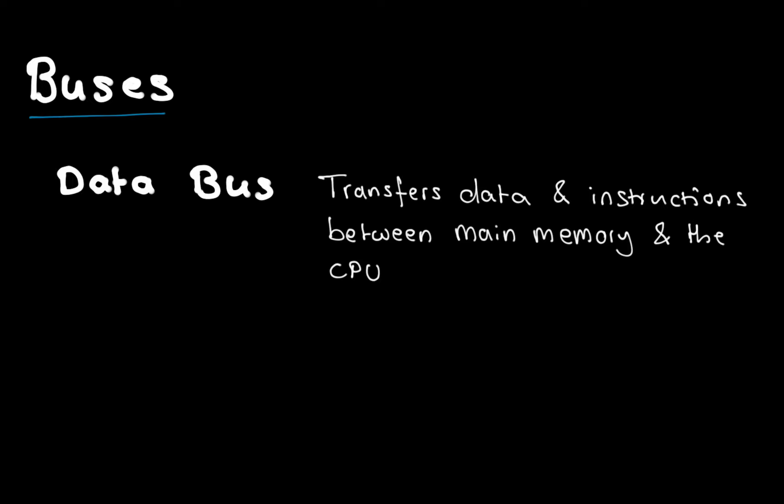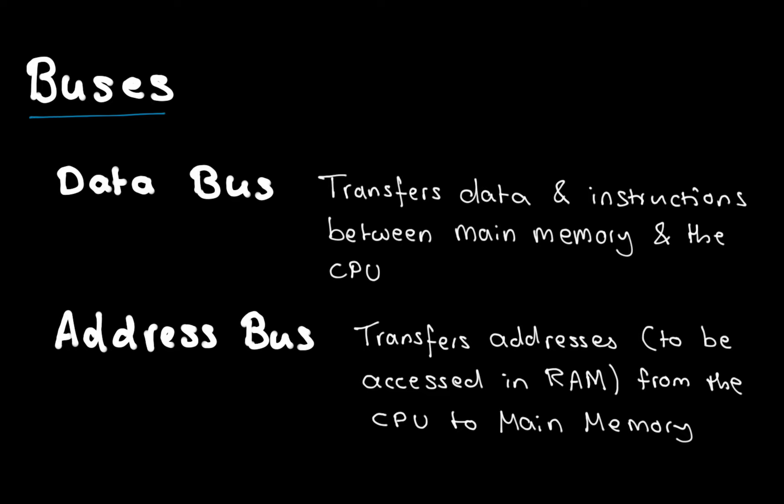Moving on to the different buses. The data bus transfers data and instructions between main memory and the CPU — think of this as carrying the actual values that have been stored. The address bus transfers addresses that are accessed in RAM, and it is one-way: we only send addresses from the CPU to main memory, like sending a postcode, whereas the data bus carries the actual parcels. The address bus only goes to main memory because main memory will always send back to the memory data register.